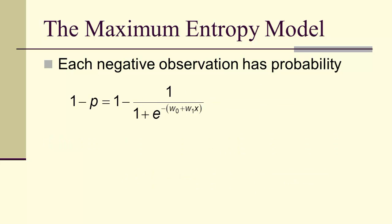Each negative observation, on the other hand, has probability 1 minus p, 1 minus that. And we can find a common denominator and simplify. And then we can multiply the top and the bottom by e to the (w0 plus w1x).